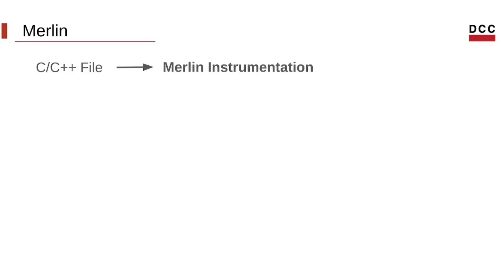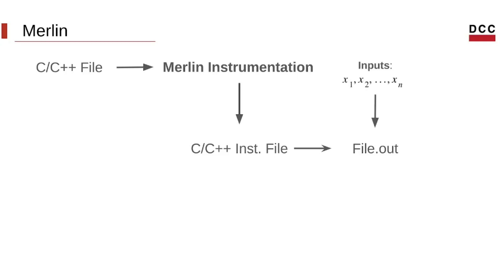We're working with a single procedure at a time, so we consider a program to be a function. Merlin's instrumentation will verify if that function has the SCP property, and if it does, it will be instrumented. Instrumentation is done by adding a counter that is incremented at the starting point of every loop in that program. So at the end of a program, that counter will have the number of loop iterations. After that, we can compile this instrumented file to get a binary, apply many different inputs, run it n times with n inputs, and get a set of samples that relate the input with the counter — our performance metric.